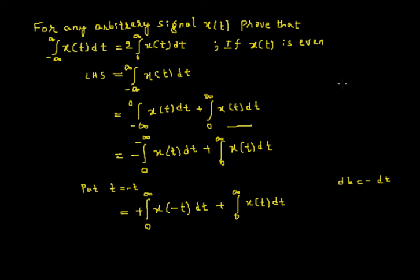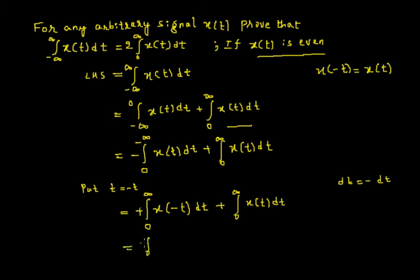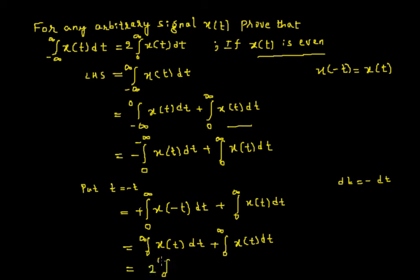In the given statement it is already said to prove this if x(t) is even. From the definition of an even signal, x(minus t) is equal to x(t) itself. Using that result, x(minus t) in the first term becomes x(t). So we now have integration from 0 to infinity of x(t) dt, plus the second term, integration from 0 to infinity of x(t) dt. Both terms are the same, so we can add them up, giving 2 times the integration from 0 to infinity of x(t) dt.